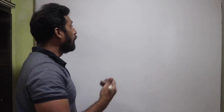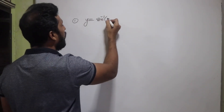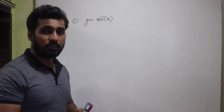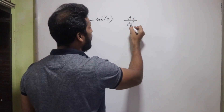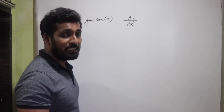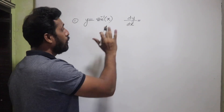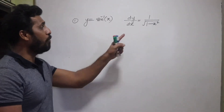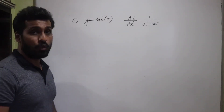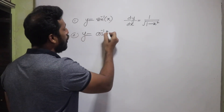Our first inverse trigonometric function is y = sin⁻¹(x). The derivative dy/dx is 1 upon √(1 − x²). The second one is y = cos⁻¹(x), and its derivative is −1 upon √(1 − x²). They form a pair — sin⁻¹ and cos⁻¹ have very similar derivatives, with only a positive/negative sign difference.